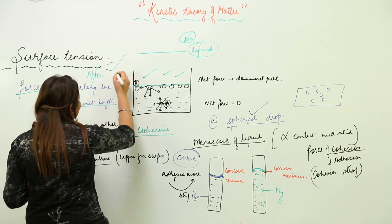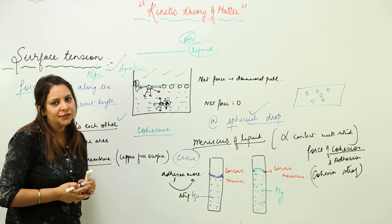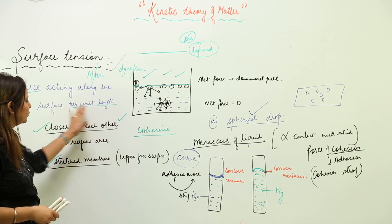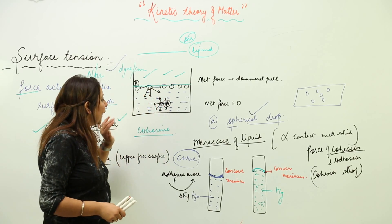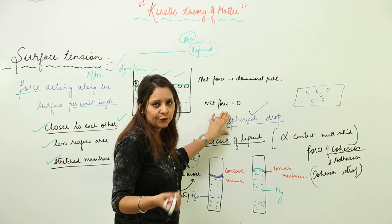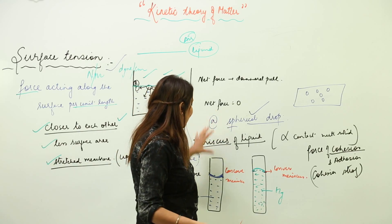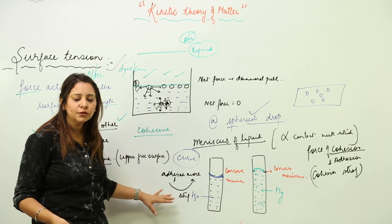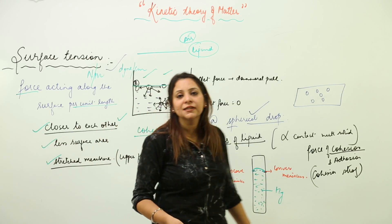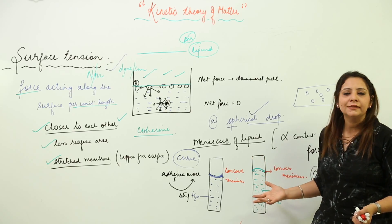So that covers what surface tension is, its cause, the phenomena we observe due to it — such as spherical drops and meniscus — and the consequences. We also discussed why a concave meniscus forms in certain liquids and a convex meniscus in others, depending on the relative strength of cohesive and adhesive forces. This is what surface tension is all about.